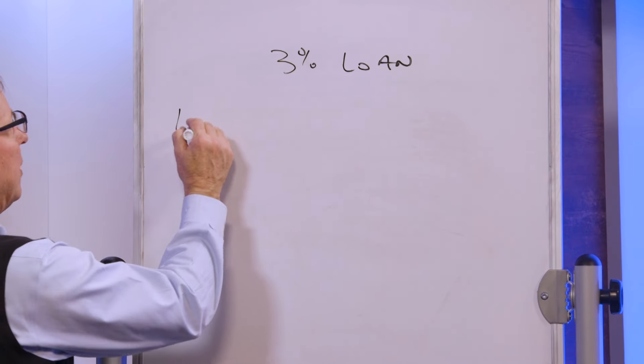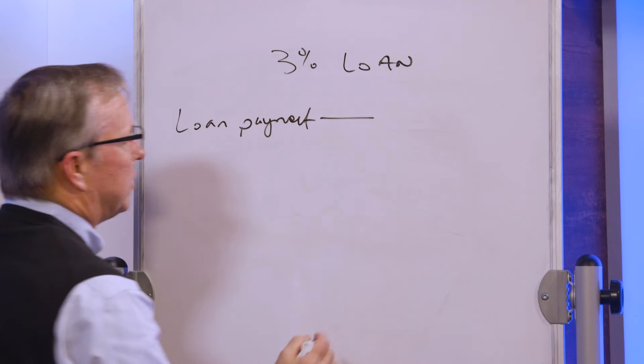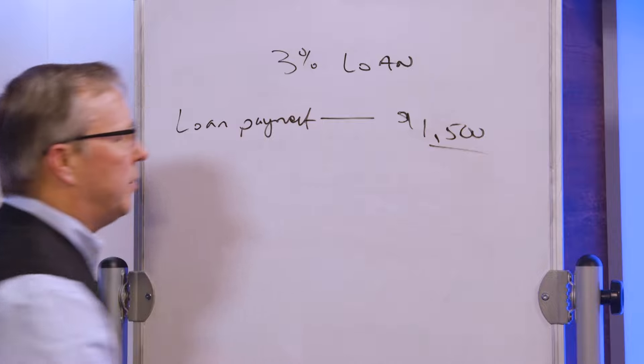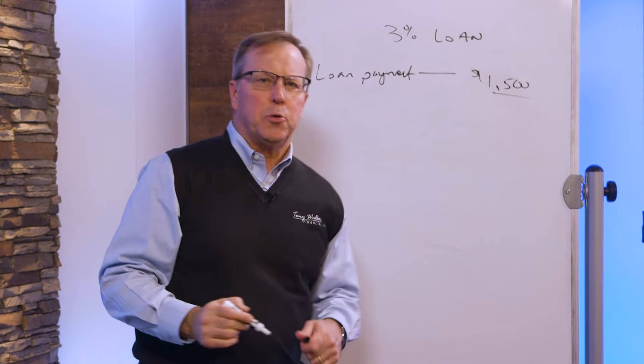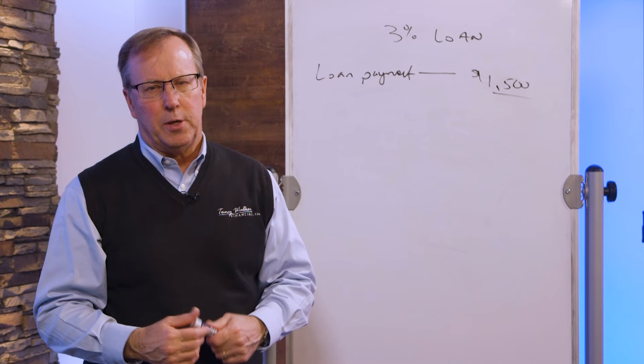So let's just say the loan payment. So remember, folks, retirement planning is cash flow. It's not even really budgeting. So let's just say whatever that loan was, this person, even though it's 3%, the principal and interest to pay back that loan is $1,500 a month.